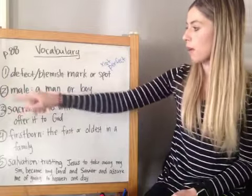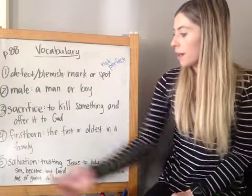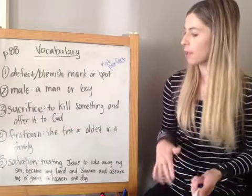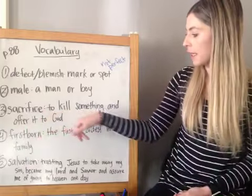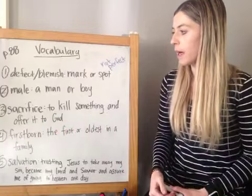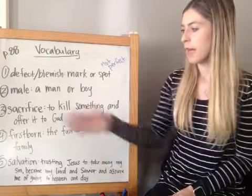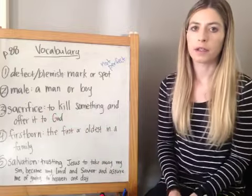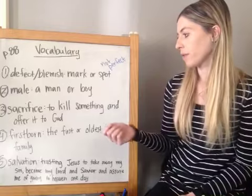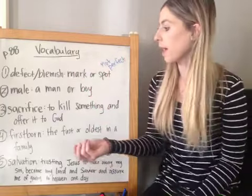Number two: male — a man or a boy. That one's easy. Number three: sacrifice. We talked about this a little bit a couple weeks ago. Sacrifice means to kill something and offer it to God. In the Old Testament, people would sacrifice an animal for their sins, to cover their sins, and this plague has something to do with that as well.